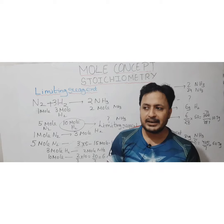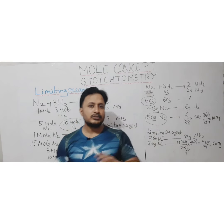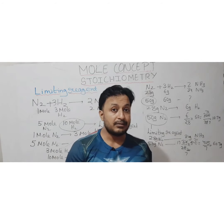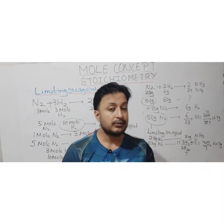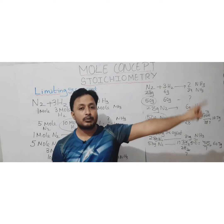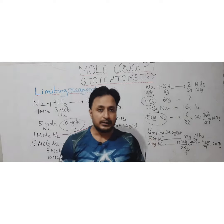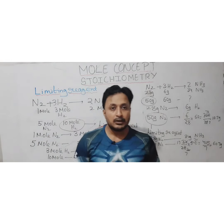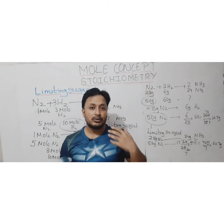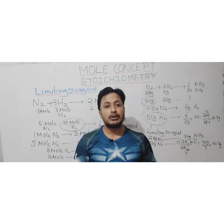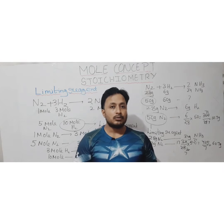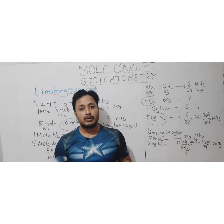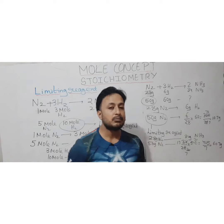If only one reactant amount is given, it directly indicates the limiting reagent and you relate it to the product. If two reactant amounts are given, first identify the limiting reagent, then relate it to the product to find the answer. Today we covered the limiting reagent and how to relate it to products. In the next video we will solve different types of stoichiometric problems. Please review this video and the previous one. Goodbye, students — like, subscribe, and share!